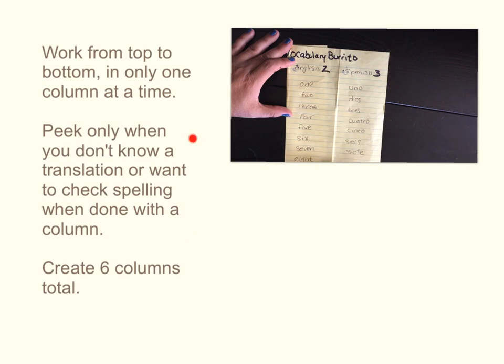The first column that has these answers should be folded back. You can open it up only to peek if you don't know how to spell one or if you don't know the word at all.